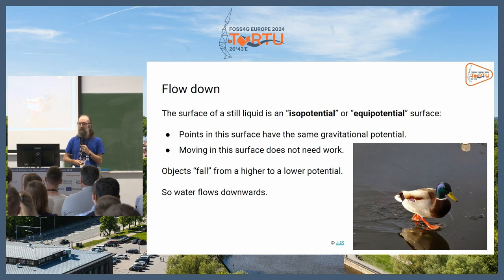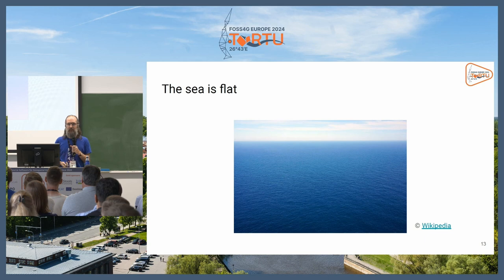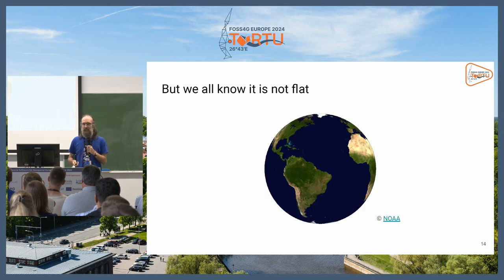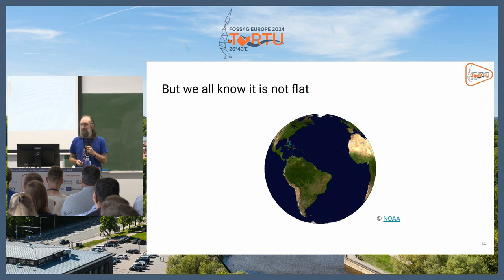Water flows downwards and at the end reaches the sea. We say the sea is flat, but we know that the sea is not flat — it's more or less a sphere. We'll see later what the shape of the sea on the Earth actually is.